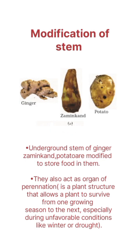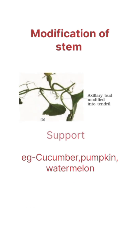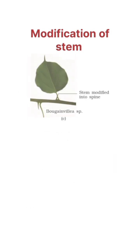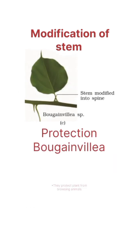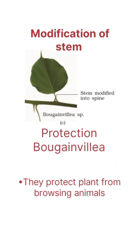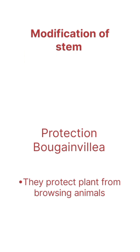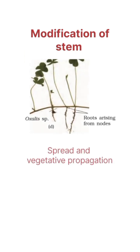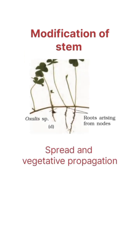Modification of stem: 8. Storage organ — underground stems. Support: 9. Protection — Bougainvillea. 9. Spread or vegetative propagation.